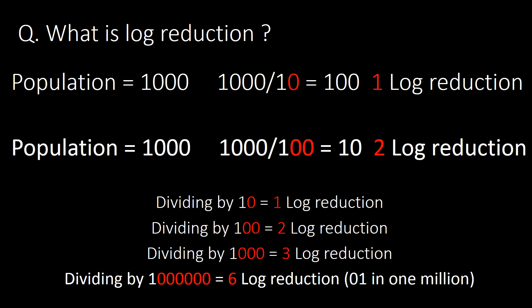In a very simple way: dividing by 10 gives 1 log reduction; dividing by 100 gives 2 log reduction; and dividing by 1000 gives 3 log reduction. Just count the number of zeros and that will be the log reduction. In the case of 6 log reduction, we reduce a population of 1 million down to 1.